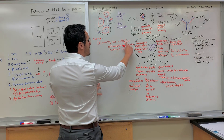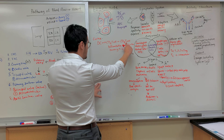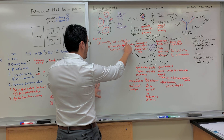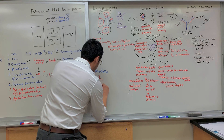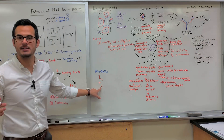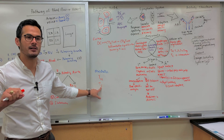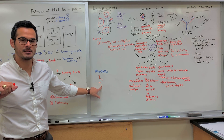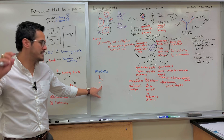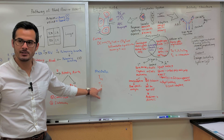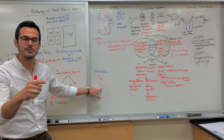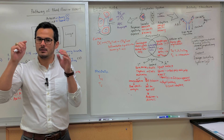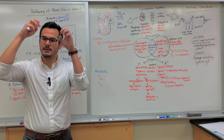What if we activate a CD8 T cell — what does it develop into? A cytotoxic T cell. Cytotoxic T cells are specific for intracellular pathogens, like viruses and cancer. They'll travel to wherever that antigen is, find the cell, and lyse it.